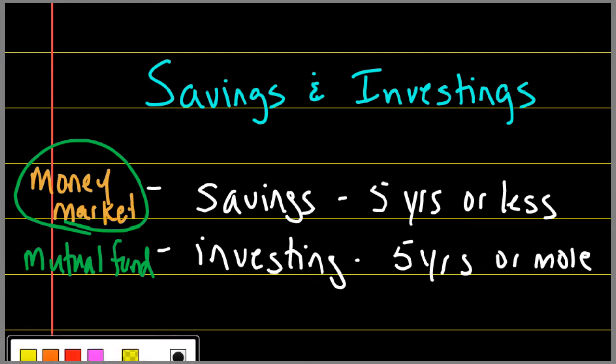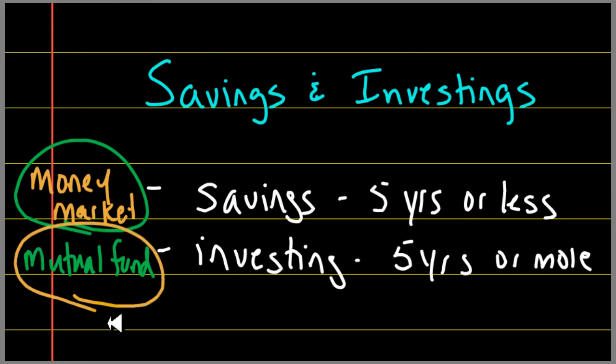Because if we start to put stuff into mutual funds, although we can get to it, sometimes there's fees and penalties, and it's just a little bit messier. So we would put money that we need, like savings money, into a money market. Stuff we don't need, stuff for retirement, we're going to put into a mutual fund. So those are the two things, really: the difference in time and where we put those types of savings and investments.